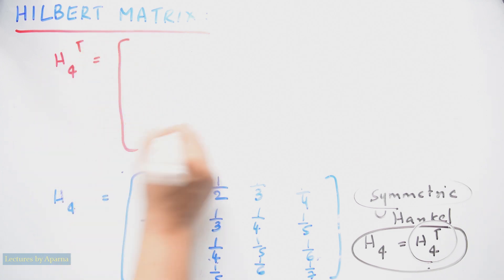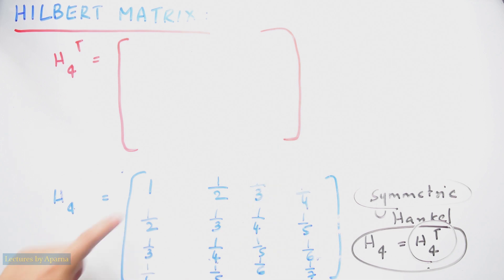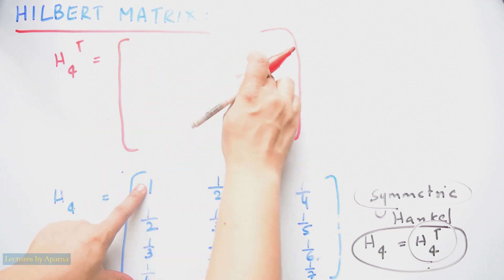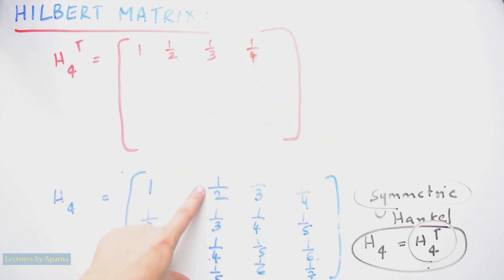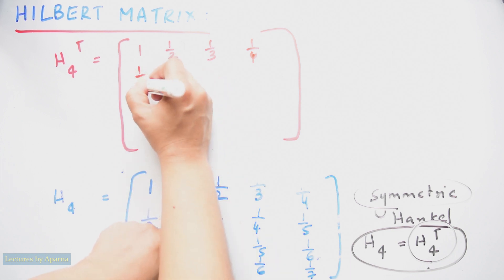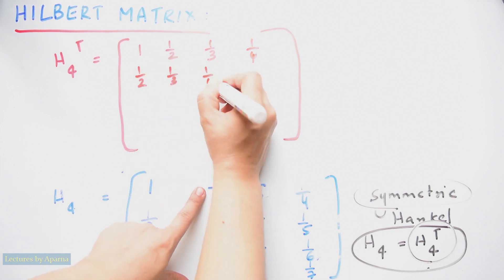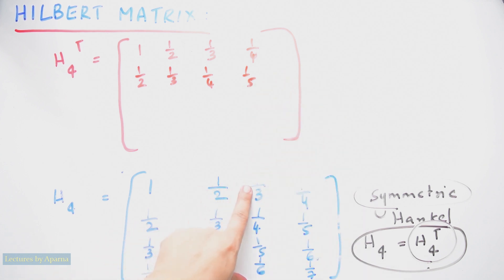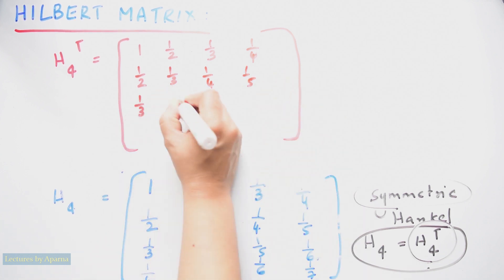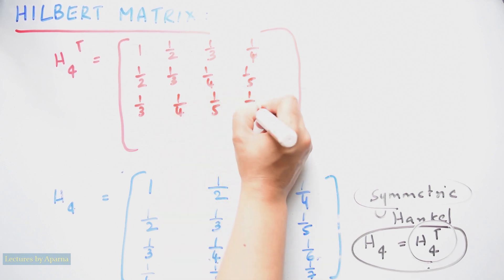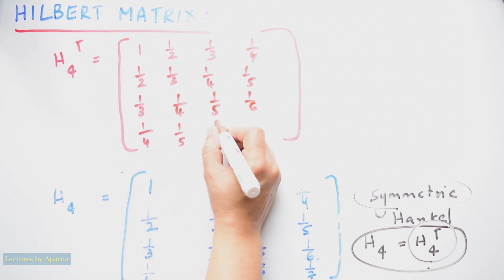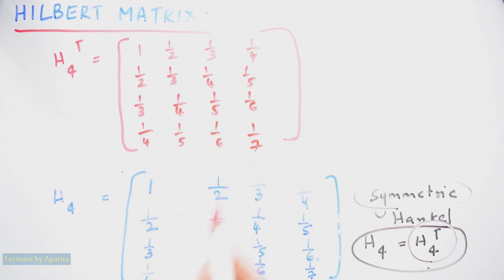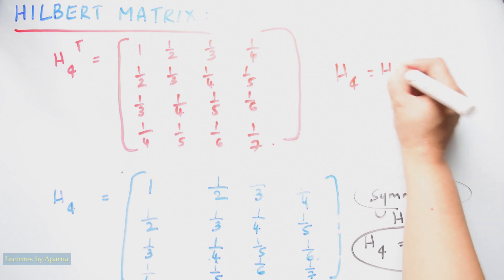H4 transpose: make the first column the row: 1, 1/2, 1/3, 1/4. The next column becomes the next row: 1/2, 1/3, 1/4, 1/5. This column becomes the next row: 1/3, 1/4, 1/5, 1/6. And this column will be the next row: 1/4, 1/5, 1/6, 1/7. See, this matrix is the same as the original matrix. Therefore H4 is equal to H4 transpose.